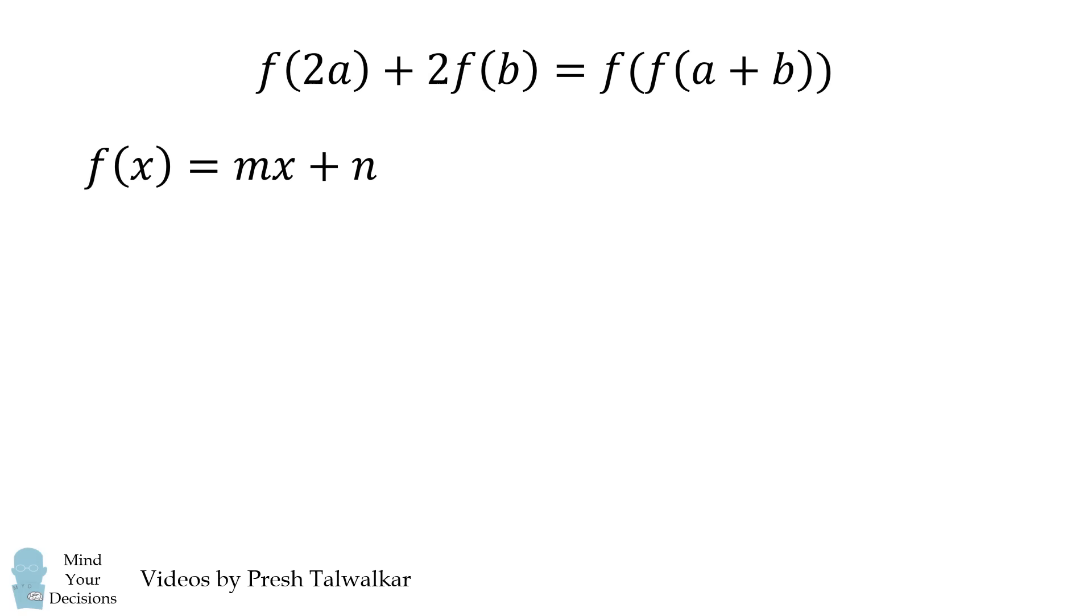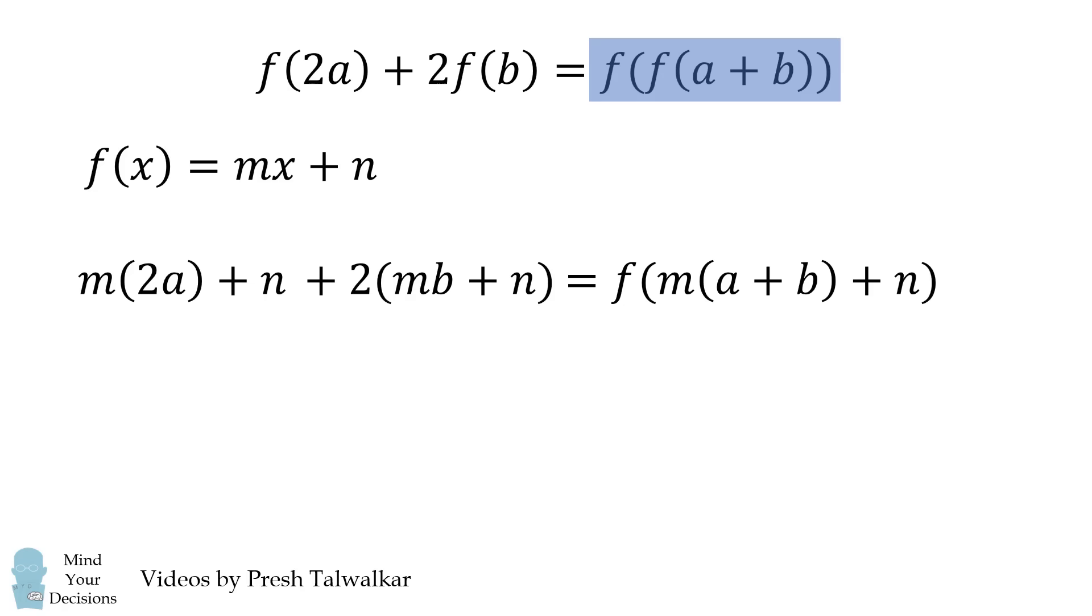We now take this form and substitute it back into the original equation. We start with F of 2A. Then we go to 2 times F of B. And finally we have a composition. So first let's do F of A plus B. Then let's do another evaluation of the function. When we do that we end up with the following equation.